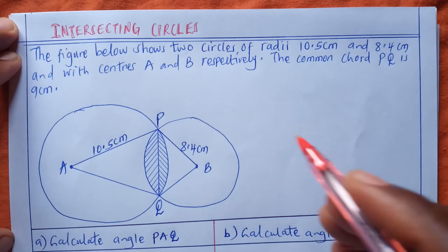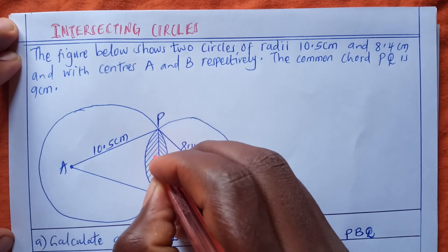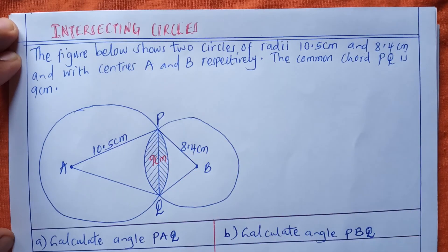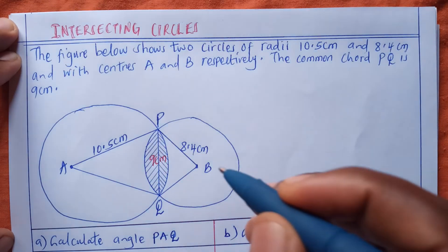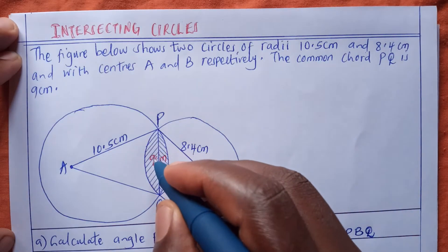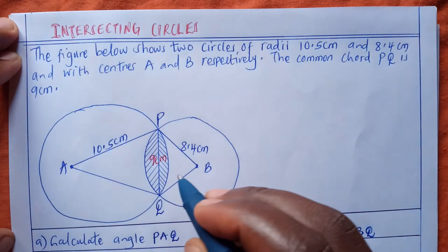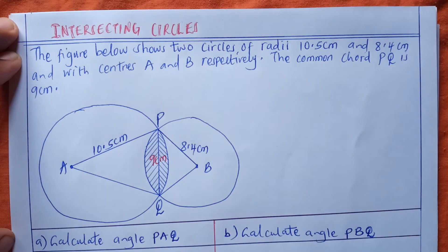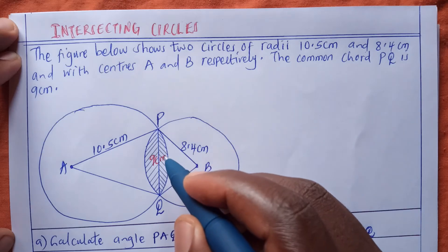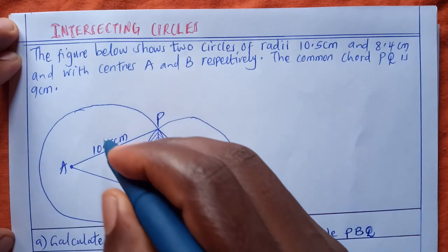The length of the chord PQ is 9 centimeters, from P to Q. Now we are supposed to calculate angle A and angle B, and in part C we are going to calculate the area of the shaded part — this part here.